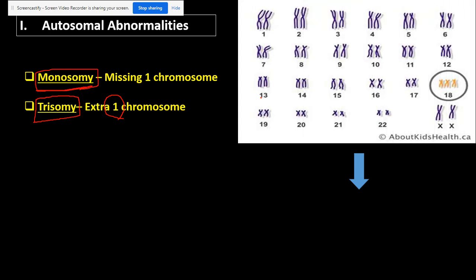I want you to check this picture and tell me if this is a monosomy or trisomy. Look at pair 1 — normal; pair 2 — normal; 3, 4, 5, 6, 7 — normal. If you can see, there is something abnormal here: I have an extra chromosome on pair 18. So in this case, do you think this is a monosomy or a trisomy?